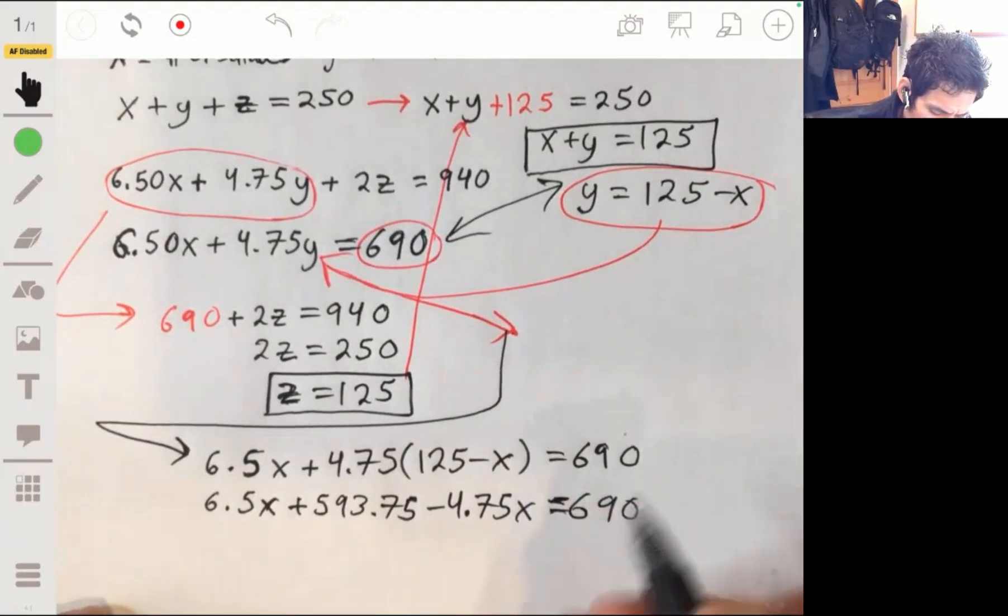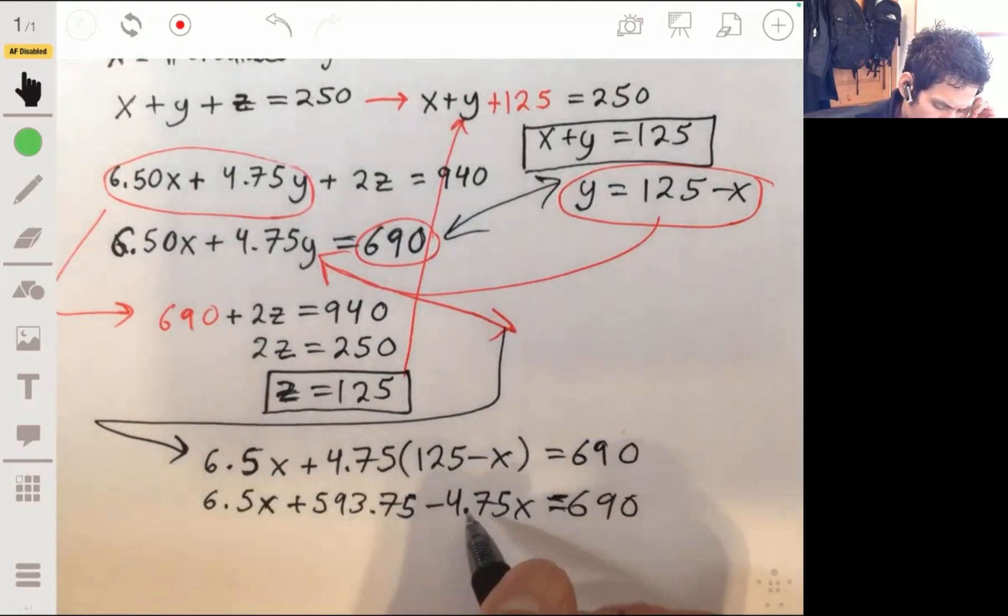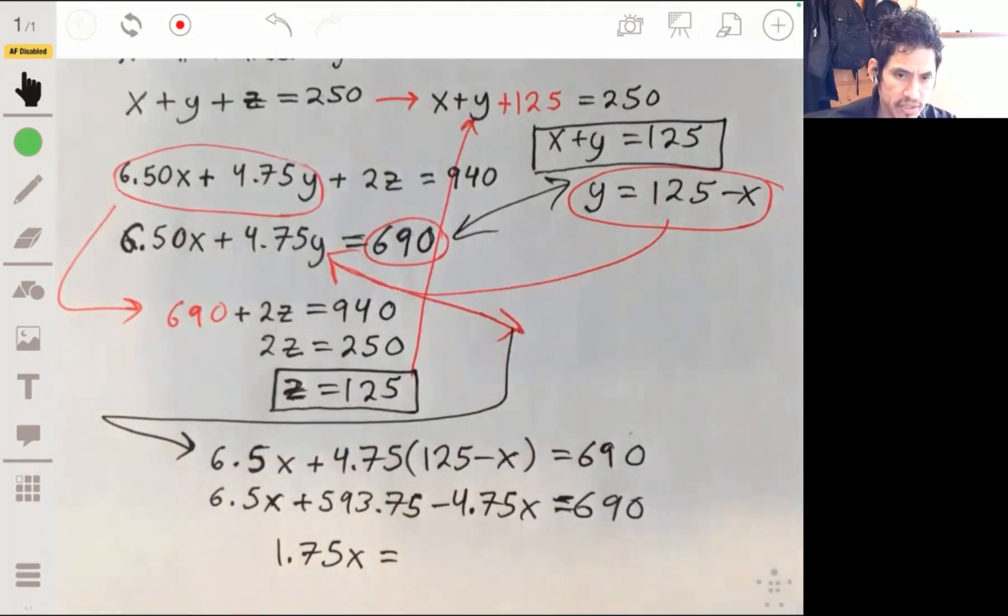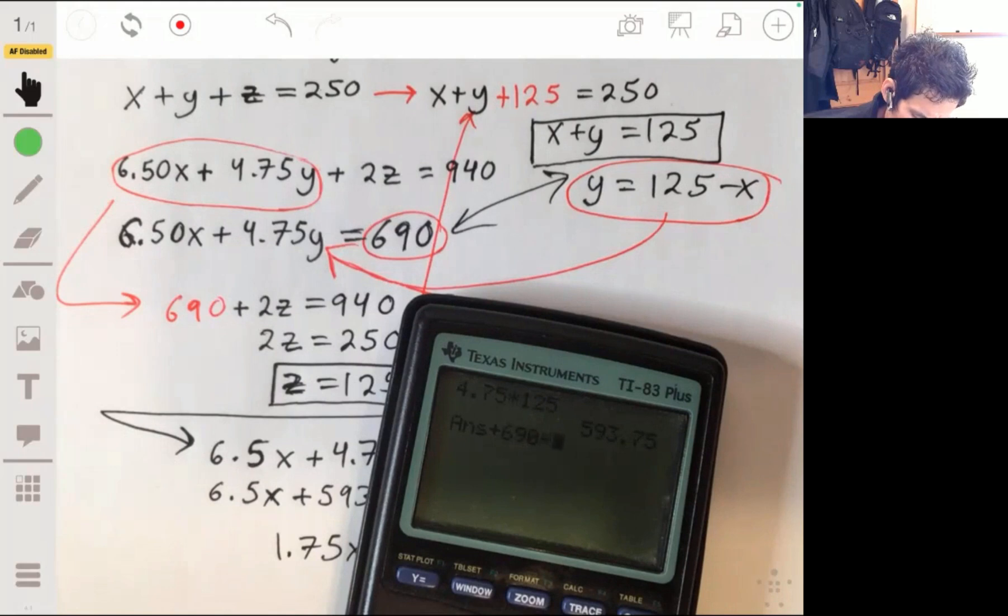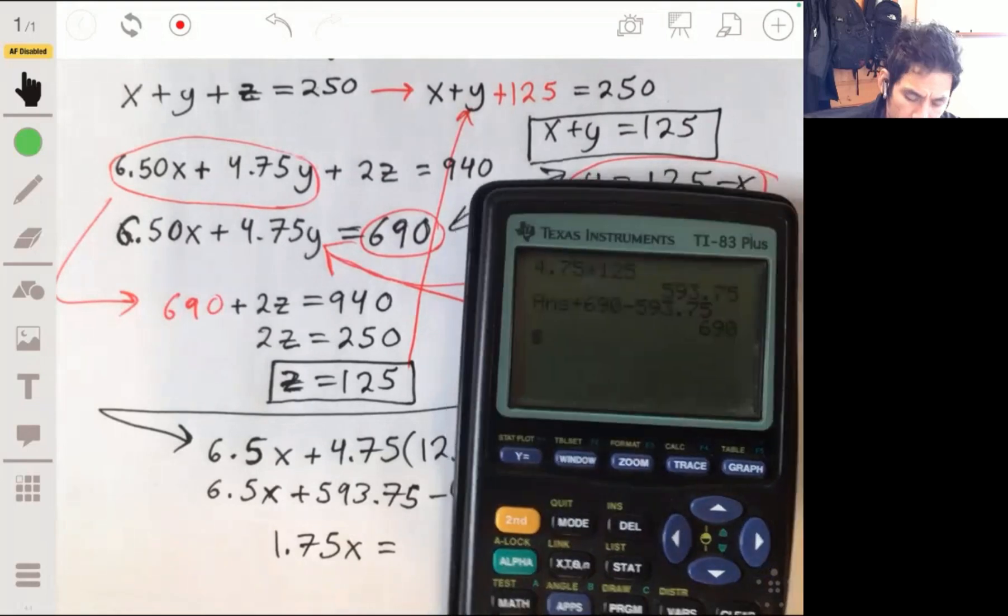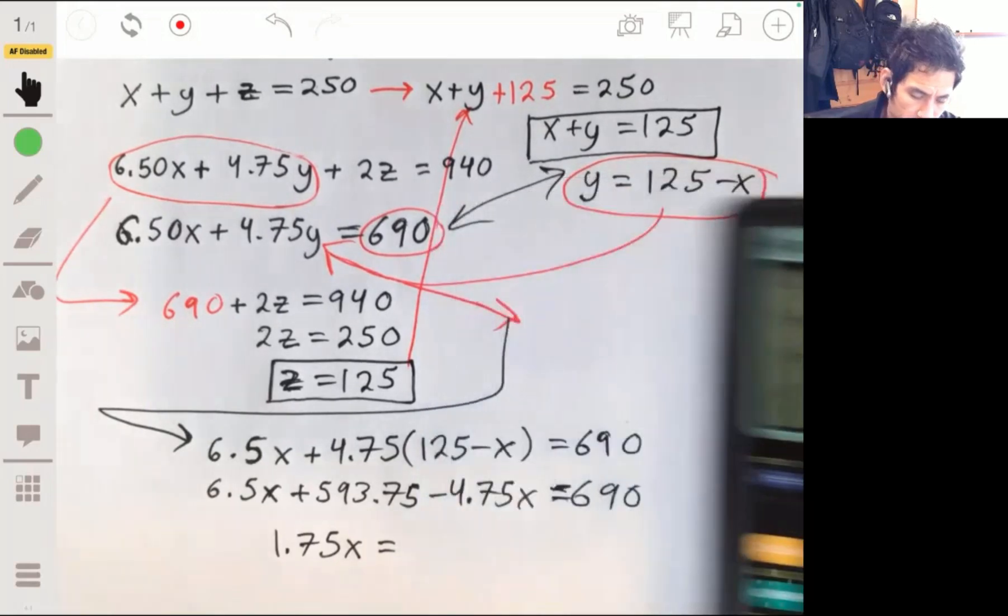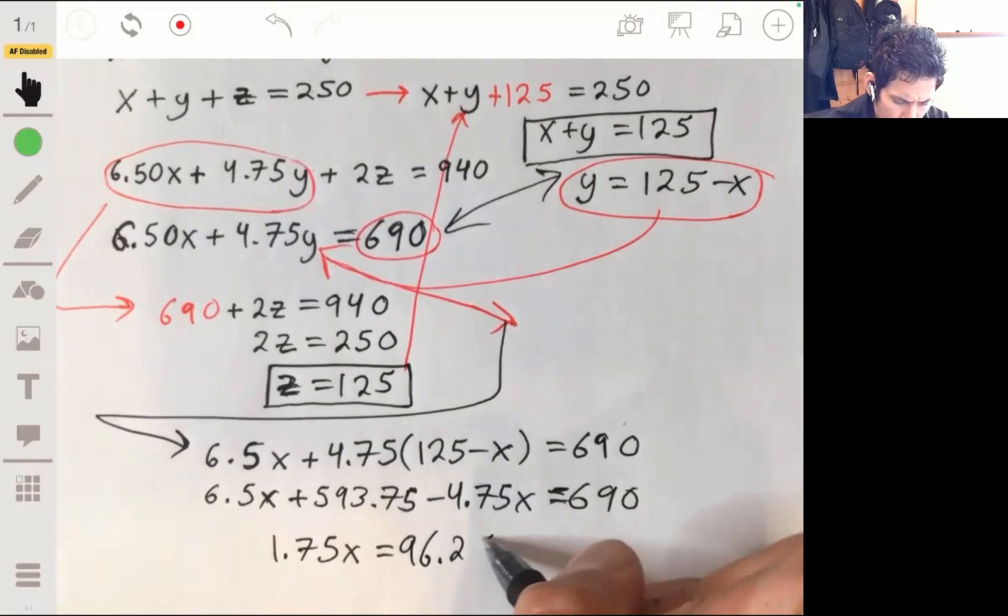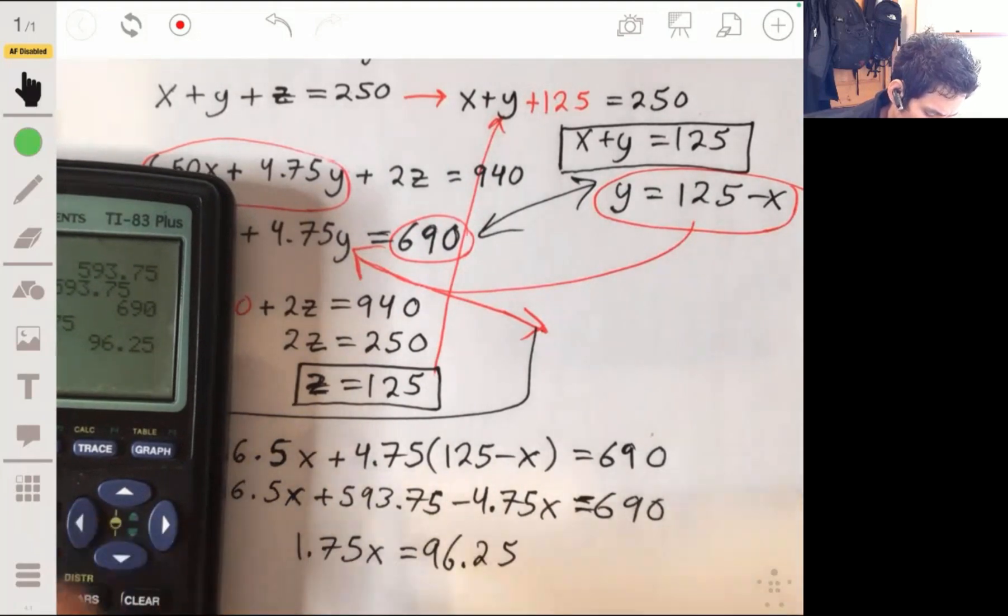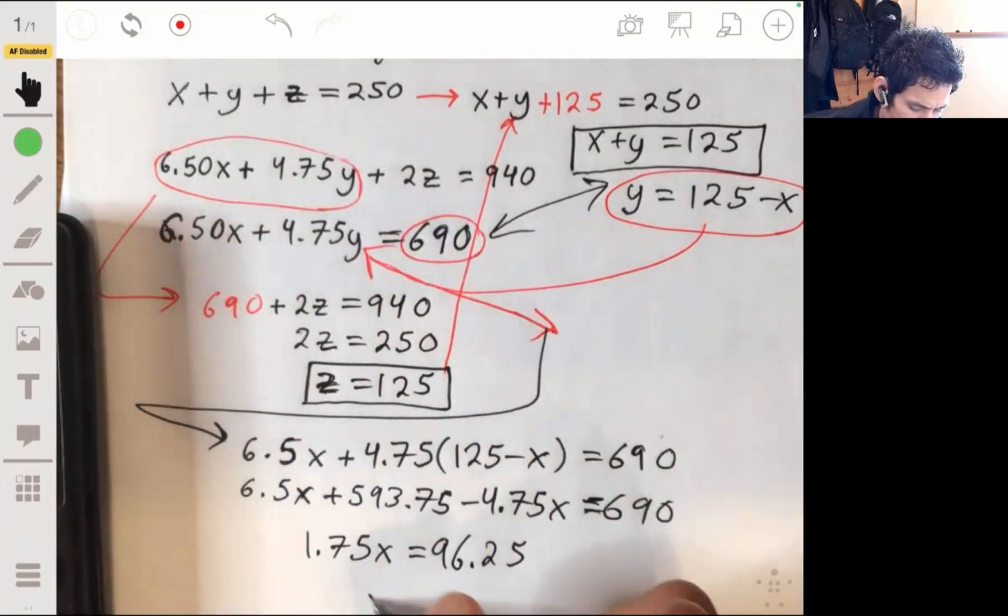So we have 6.5X minus 4.75X equals 690. So we have 6.5X minus 4.75X, so that's going to be 1.75X. And just divide this and solve for X, so divided by 1.75, so we get that X is 55.